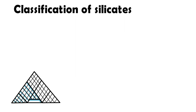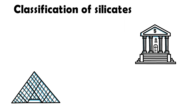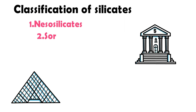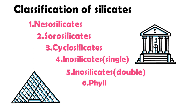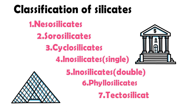Silicate minerals are generally classified into major groups according to the structure of their silicate anion: nesosilicate, sorosilicate, cyclosilicate, inosilicate single and double, phyllosilicate, and tectosilicate.